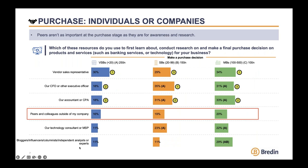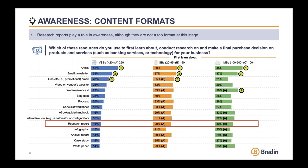Finally, at the purchase stage, peers are not number one — they're not even in the top three — but they still play an important role. A key takeaway from these three slides is that business owners want to hear from their peers. Apart from anything you're doing to generate referrals, conducting surveys of small business owners and playing back to business owners the advice and experience of their peers is a great way to engage them.